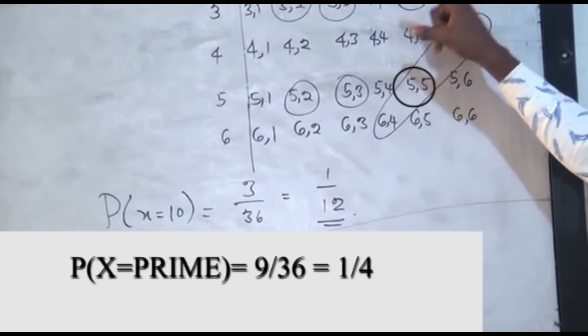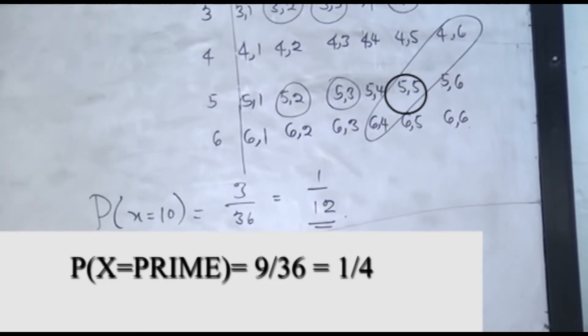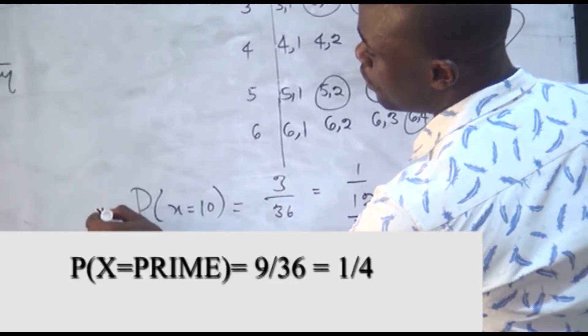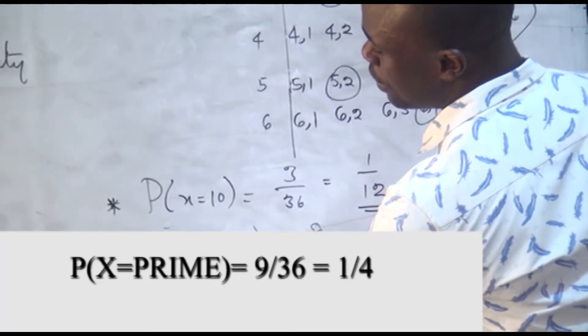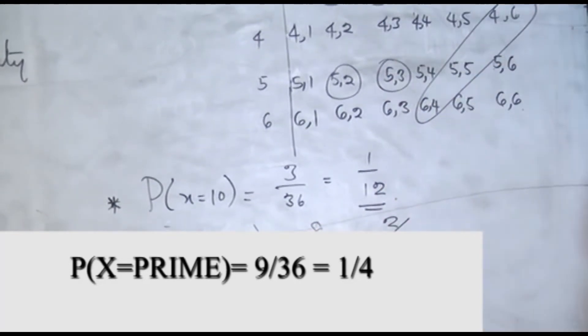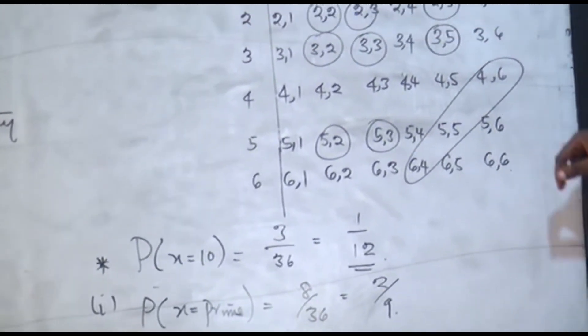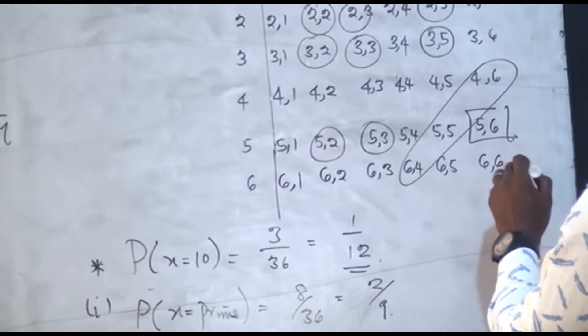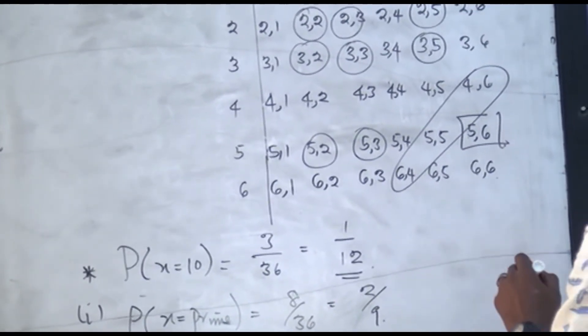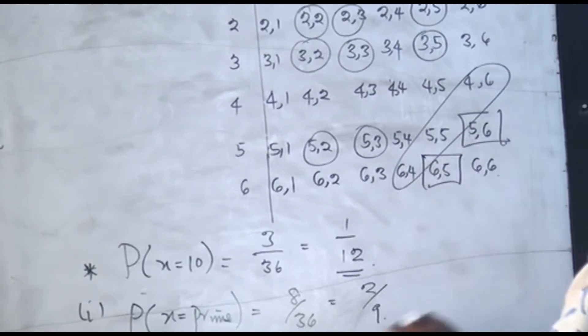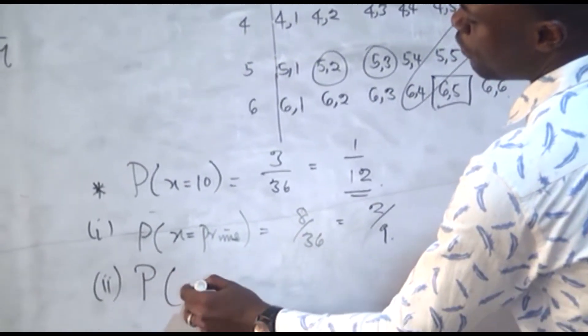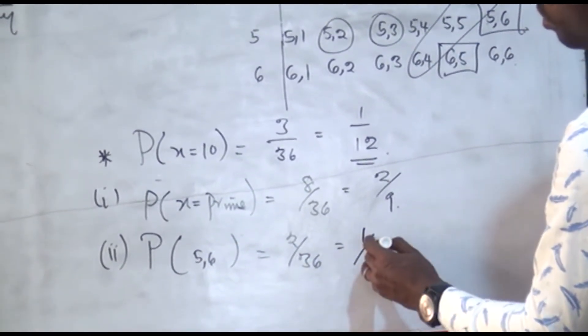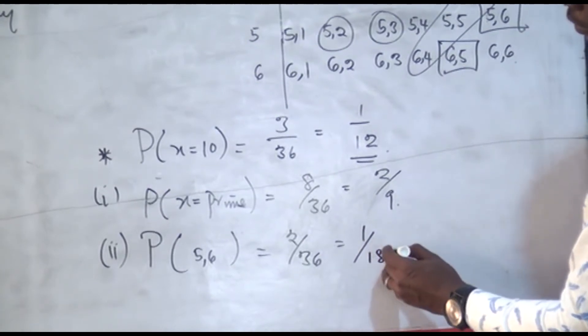So that's the possibility of picking two numbers that are primes. And this one that came with the question is probability of picking 5 and 6. That one is very clear here. Where are 5 and 6? This is 5 and 6, just one—5 and 6 twice. So that will be 2 over 36, which equals 1 over 18.